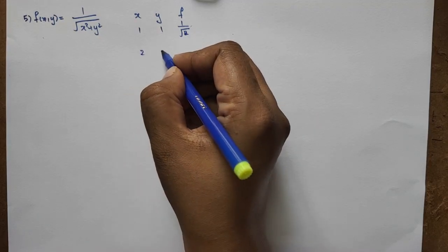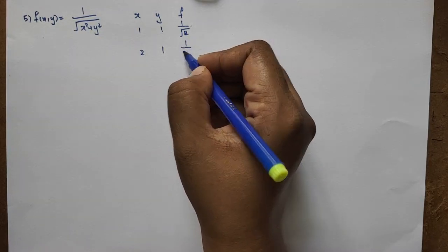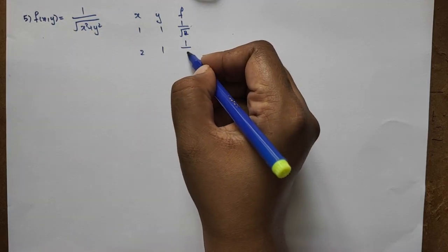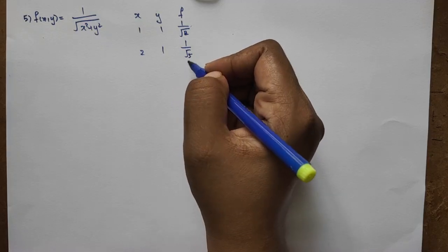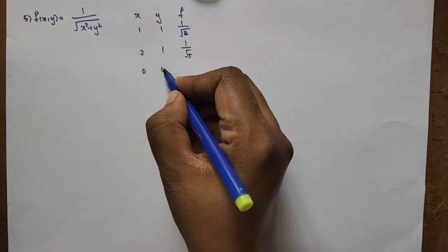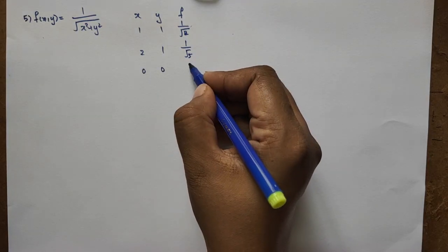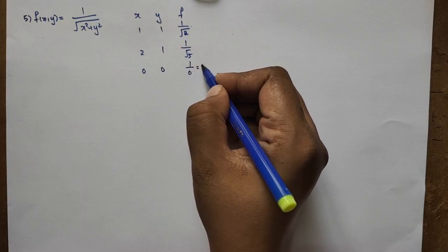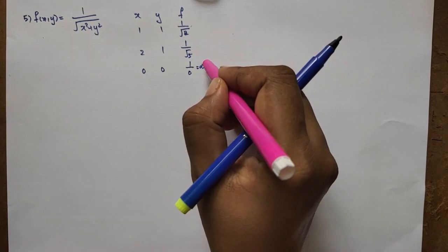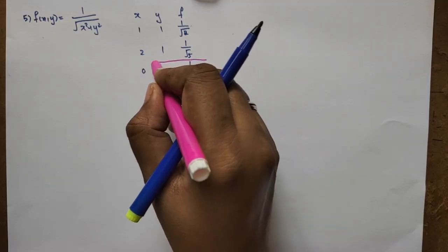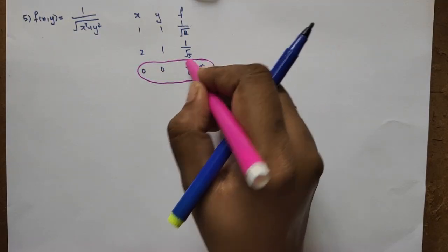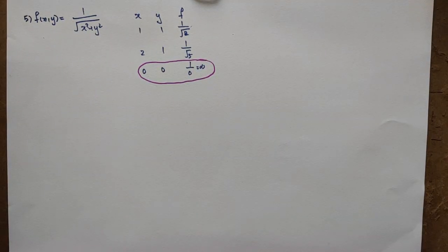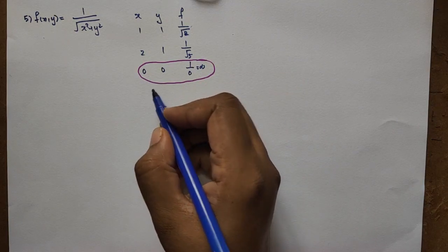For example, f(2,1) = 1 divided by the square root of 4+1 = 1/√5. But f(0,0) = 1 divided by the square root of 0, which is 1/0 — undefined. So the denominator x squared plus y squared must not equal 0.